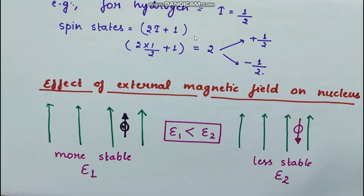Putting I = 1/2 into the formula gives 2, meaning there are 2 spin states: +1/2 and −1/2. This means when we place the nucleus in an applied magnetic field, it can align itself either in the direction of the applied field — which is more stable and lower energy — or opposite to the applied field, which is less stable and has more energy.